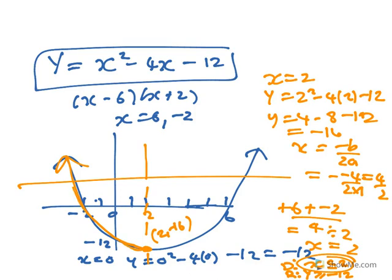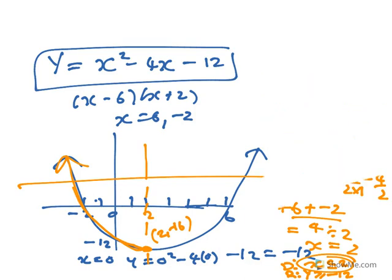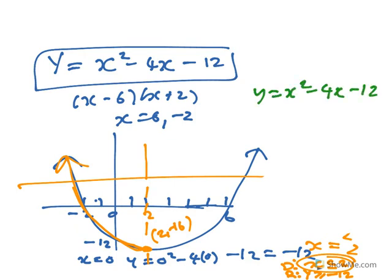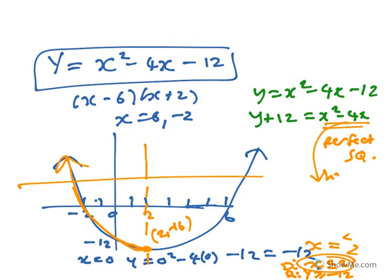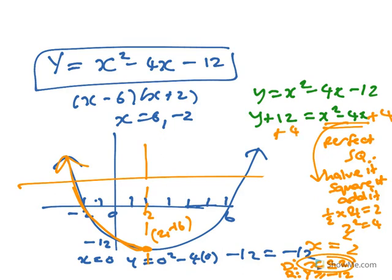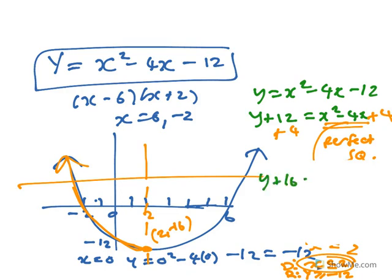With the domain restricted, we need to find the actual equation of the inverse function. You start off with the equation, bring the 12 over, and out of this part you want to create a perfect square. To create a perfect square, take the 4, halve it to get 2, square it to get 4, and add it to both sides. So plus 4 on both sides. You end up with y plus 16 equals x minus 2 all squared, because that's a perfect square.